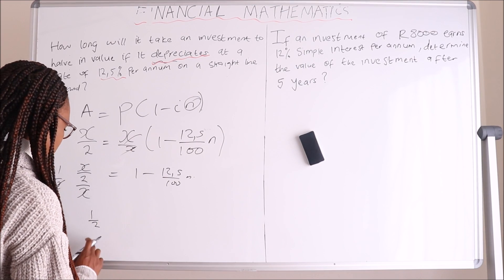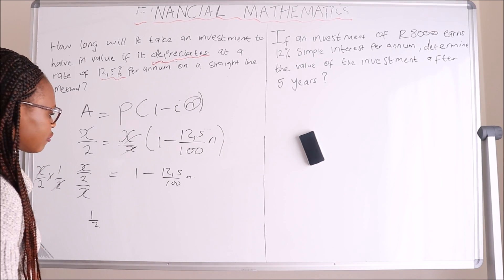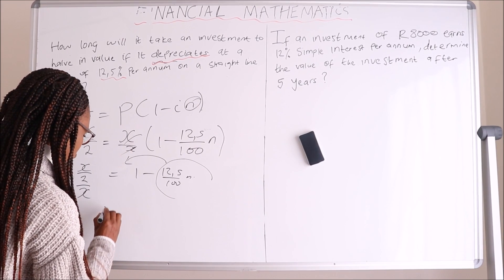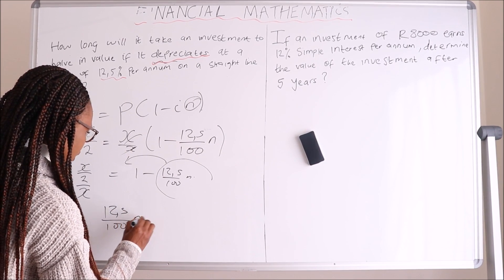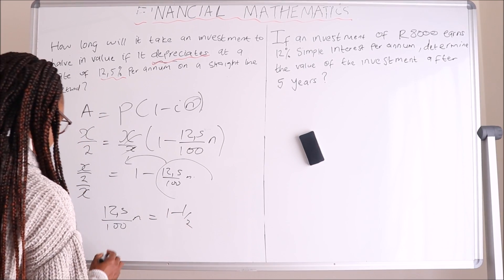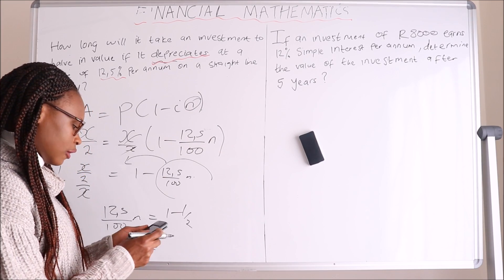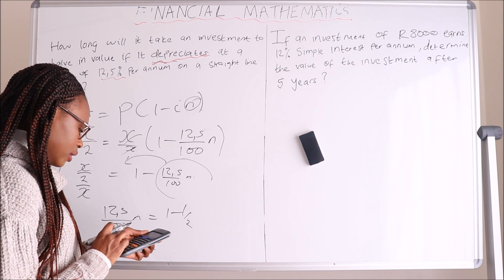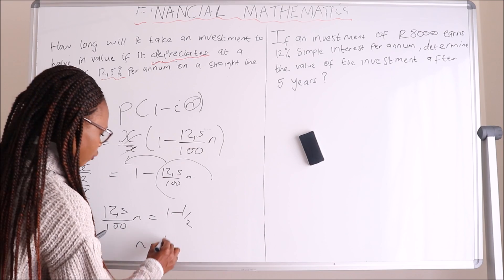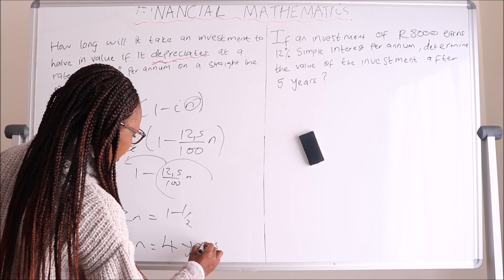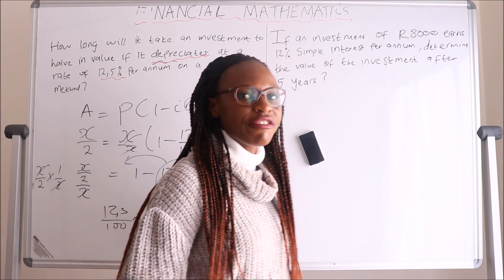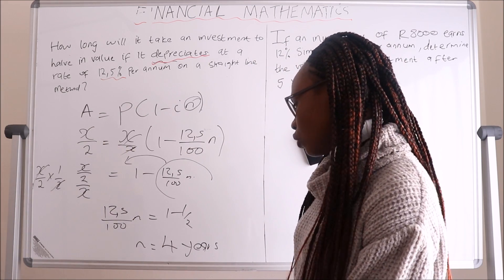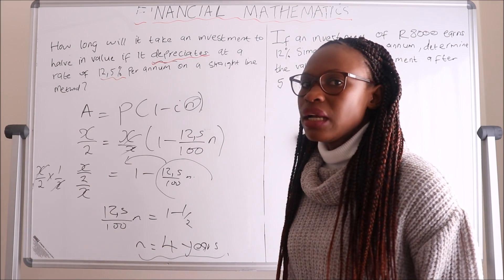With 1 over 2 on the left, making N the subject means moving 12.5 over 100 to the other side. We have 12.5 over 100 times N equals 1 minus 1 over 2, which is 0.5. Dividing both sides by 12.5 percent gives us N equals 4 years. So it will take 4 years for the investment to be half its original amount when depreciating at 12.5 percent per annum.